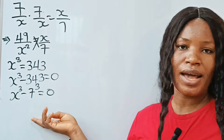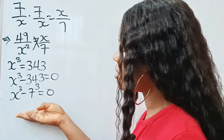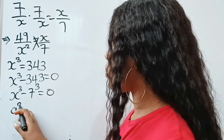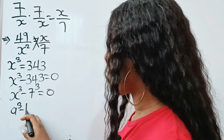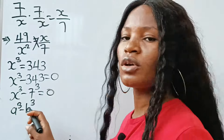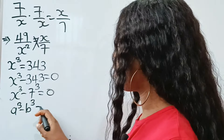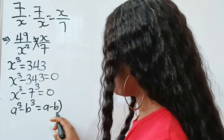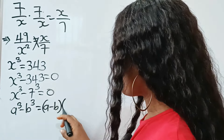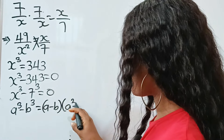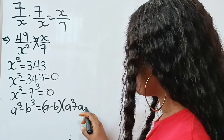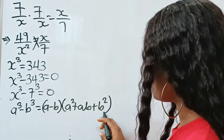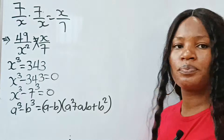Now we have an identity, and this identity states that a to the power of 3 minus b to the power of 3 is equal to (a minus b) multiplied by (a squared plus ab plus b squared).